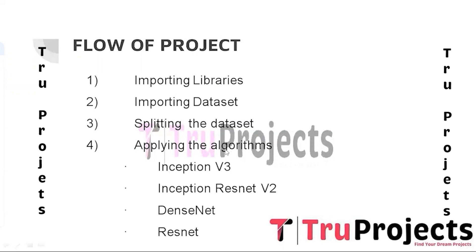The fourth step is applying the algorithms. Here we apply four deep learning algorithms. The first is Inception V3, a deep convolutional neural network designed for image classification that achieves state-of-the-art performance on various benchmark datasets. Inception V3 is characterized by its unique Inception module, which uses multiple filter sizes in parallel to capture spatial patterns at different scales.